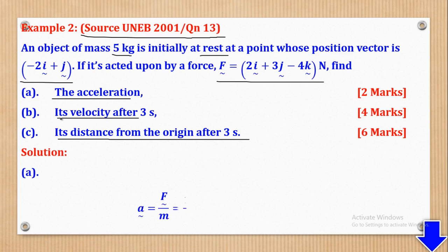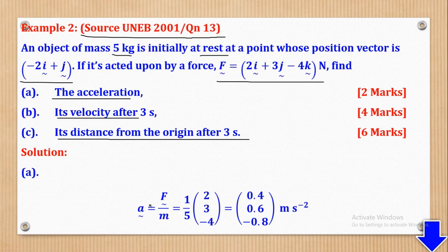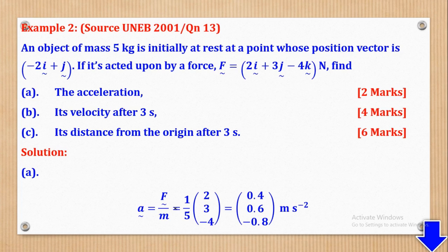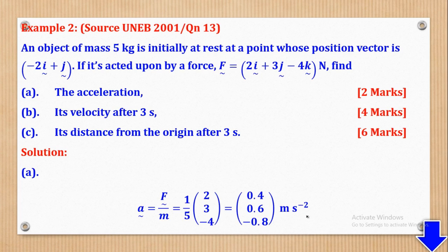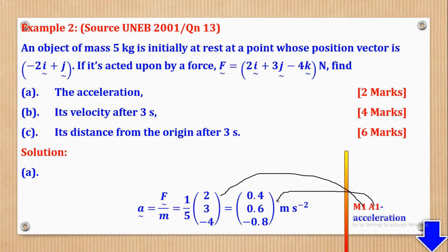For part A, acceleration can be found from Newton's second law F = MA. Making A the subject gives A = F/M. Note the tilde on F and A (vectors), but not on M (scalar). My mass was 5 kg and my force was 2i + 3j − 4k. Simplifying gives acceleration = 0.4i + 0.6j − 0.8k meters per second squared. M1 is for substitution using Newton's second law, and A1 is for each component of the acceleration in vector form.